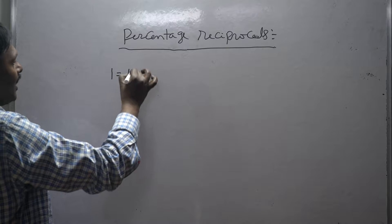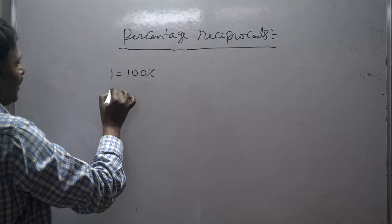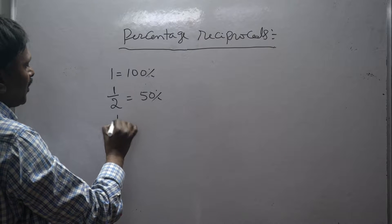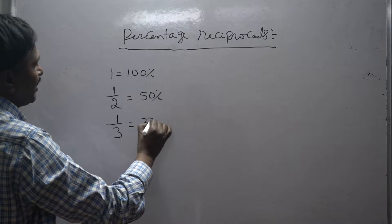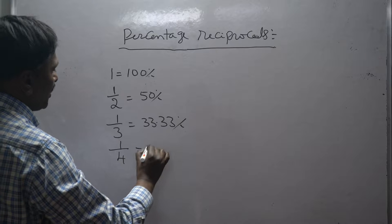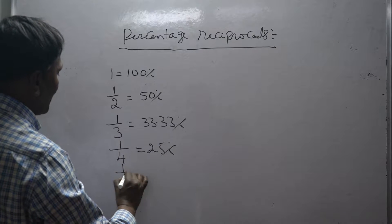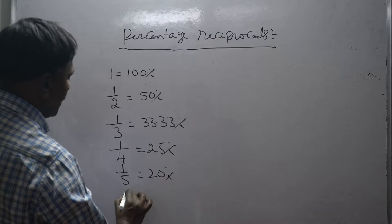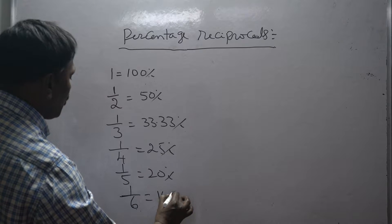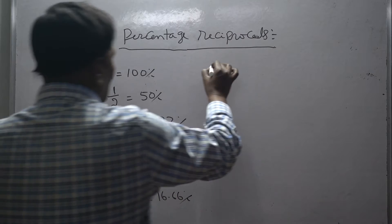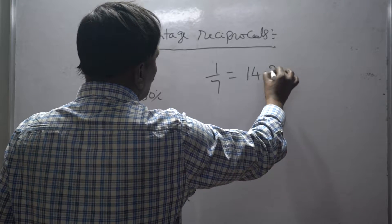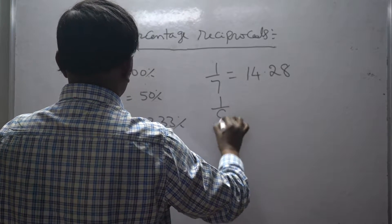1 is equal to 100 percentage. 1 by 2 is equal to 50 percentage. 1 by 3 is equal to 33.33 percentage. 1 by 4 is equal to 25 percentage. 1 by 5 is equal to 20 percentage. 1 by 6 is equal to 16.6 percentage.